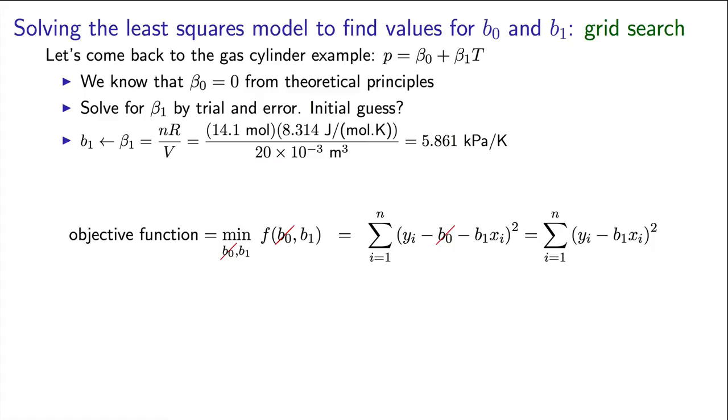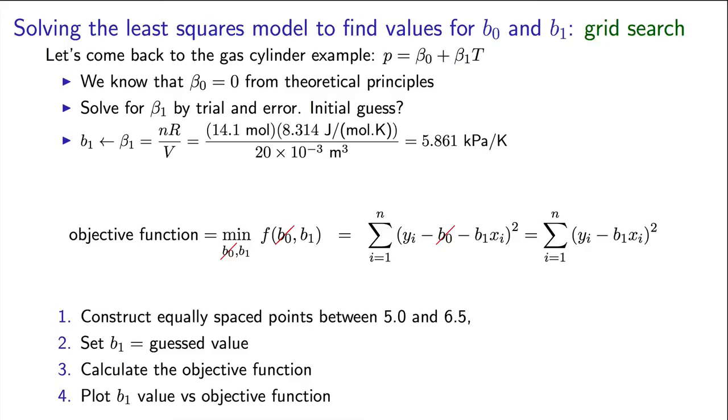Let's construct equally spaced points between 5 and 6.5. And then for every one of these guessed b1 values, we can sub into the objective function.